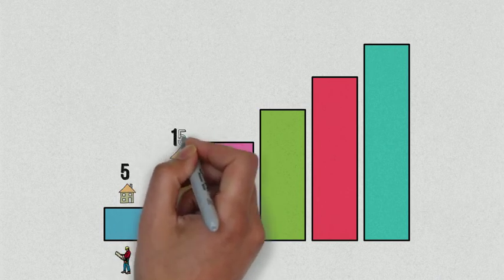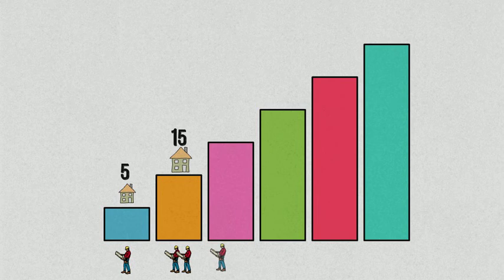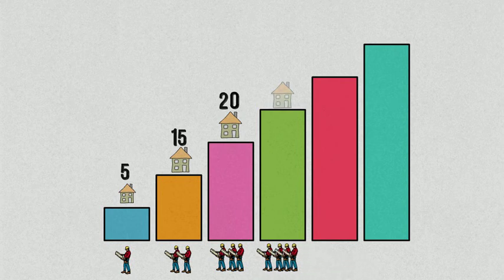Two employees would be able to mow 15 houses in one day. If I had a third employee, they would be able to mow 20 houses in one day.